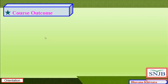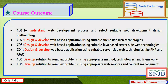The university has given objectives mapped to six course outcomes. CO1, linked to Unit 1, is to understand the web development process and select a suitable web development design methodology — so at the level of understanding. CO2 moves to the level of design and development: students should be able to design and develop a web-based application using suitable client-side web technology.